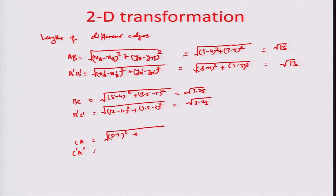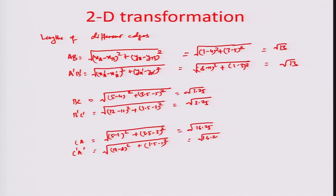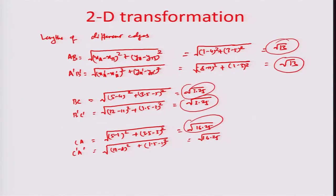For CA: square root of (5−1)² + (3.5−3)² = √16.25. For C-dash A-dash: square root of (12−8)² + (1.5−1)² = √16.25 — the same. The lengths of all edges are unchanged, confirming that translation does not change the shape. The triangle merely translates in unison — all three points make a similar translational move to a new location, constituting the same triangle as before.